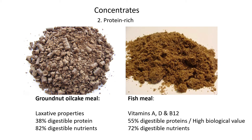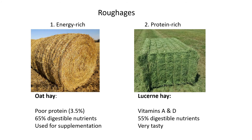Fish meal has added vitamins A, D, and B12, which is very good for animals. It has a higher digestible protein index of 55%, meaning it has a high biological value. Fish meal has more protein than groundnut oil cake meal because it's an animal product, and animal products generally have more protein than plant-based ones. Fish meal also has 72% digestible nutrients, making both examples very beneficial.